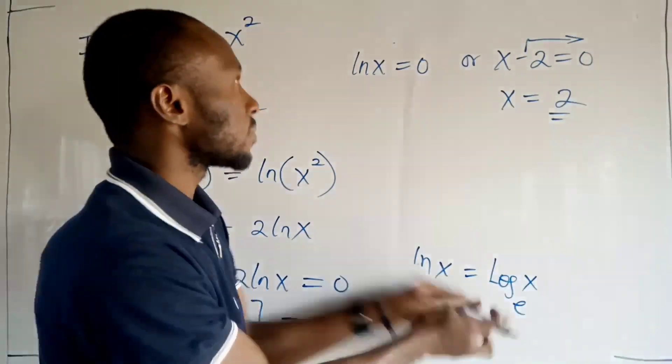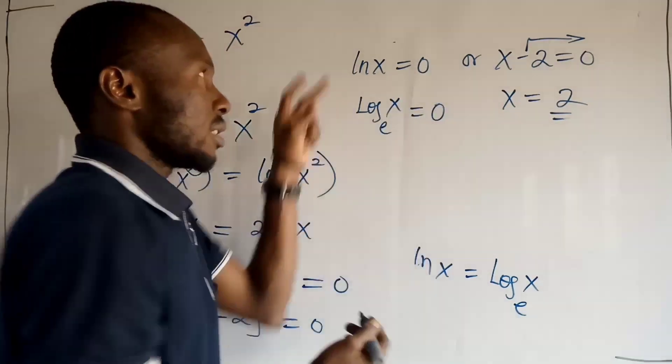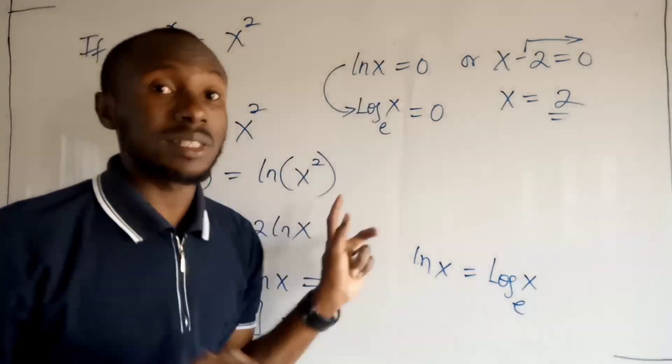So this is going to be written as log x to base e is equal to 0. This and this are the same, okay?